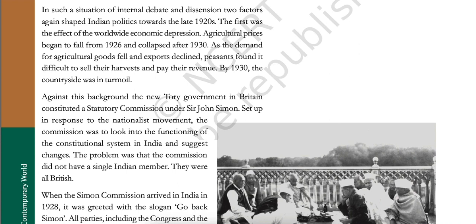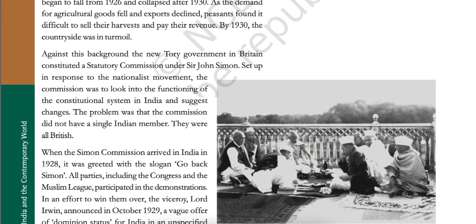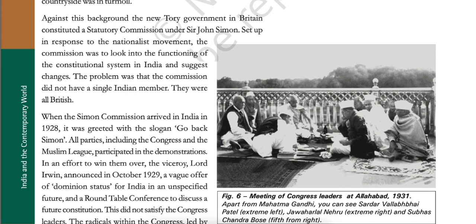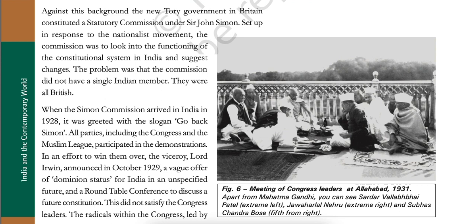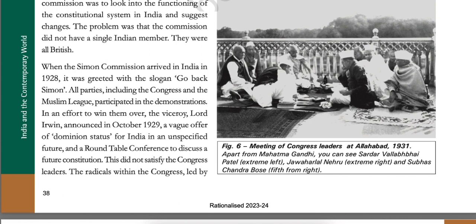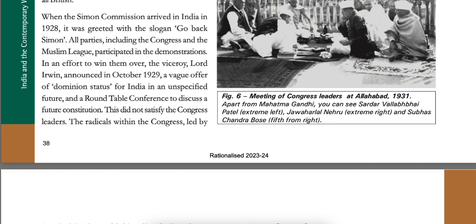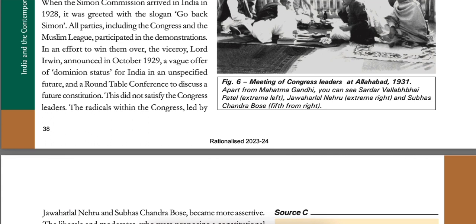Two factors again shaped Indian politics towards the late 1920s. The first was the effect of the worldwide economic depression. Agricultural prices began to fall from 1926 and collapsed after 1930. As the demand for agricultural goods fell and exports declined, peasants found it difficult to sell their harvest and pay their revenue. By 1930, the countryside was in turmoil. Against this background, the new Tory government in Britain constituted a statutory commission under Sir John Simon. Set up in response to the nationalist movement, the commission was to look into the functioning of the constitutional system in India and suggest changes. The problem was that the commission did not have a single Indian member — they were all British. When the Simon Commission arrived in India in 1928, it was greeted with the slogan 'Go back Simon.' All parties including the Congress and the Muslim League participated in the demonstrations.